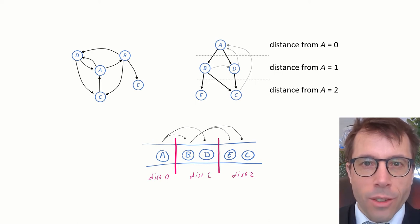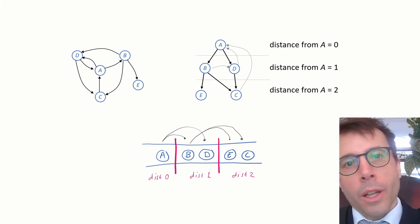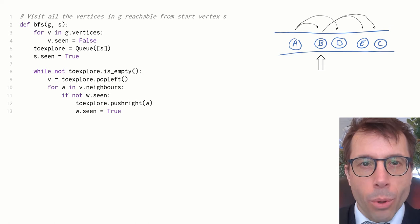Now what's really lovely about this algorithm is that it's visited vertices in order of distance from A, but we didn't have to compute any distances—the algorithm just does it implicitly. Okay, let's turn this into code. Hit pause, have a quick read through, and then I'll draw your attention to the interesting bits.